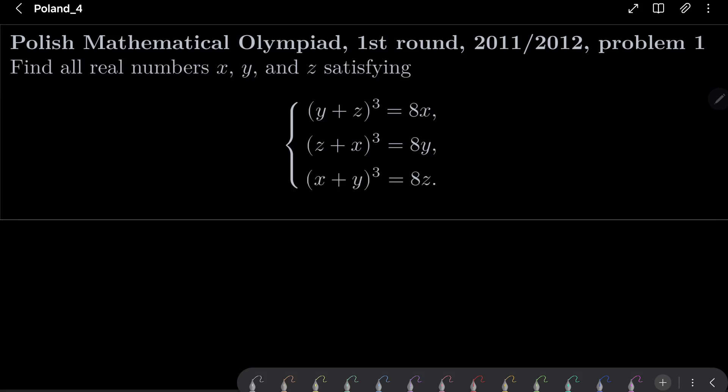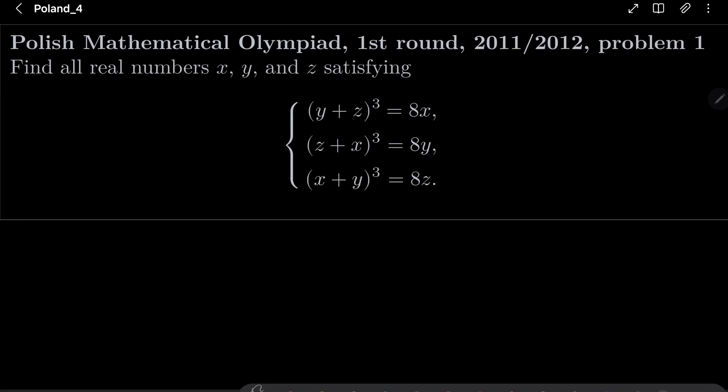Alright, so as I suggested, let's take our three equations and take cube roots. So we have y+z = 2∛x, z+x = 2∛y, and x+y = 2∛z.